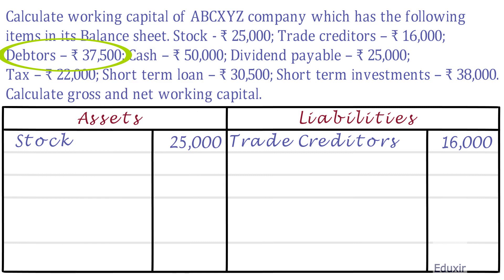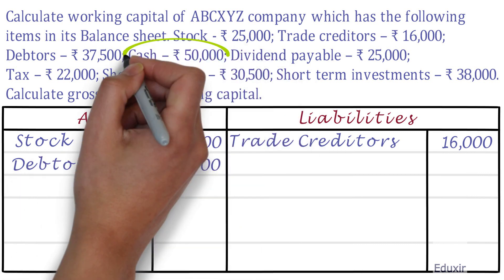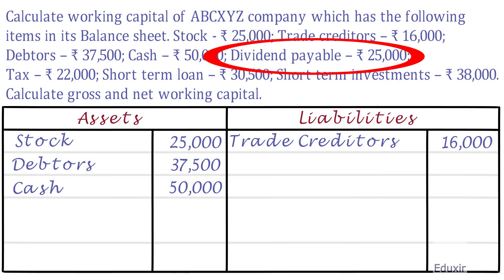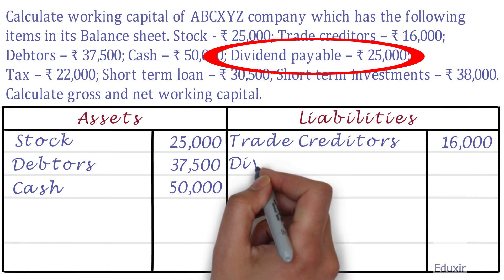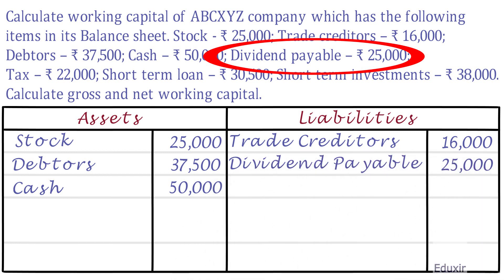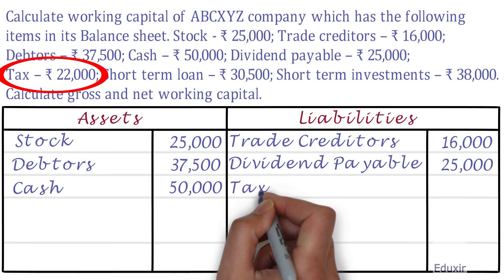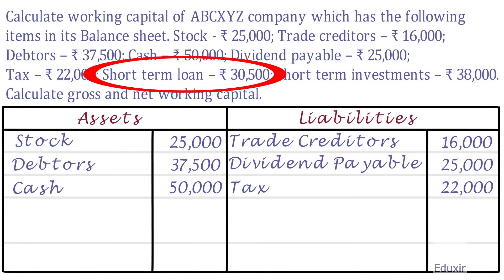Debtors fall under assets — this is the amount the company has to receive from external customers or clients, so it falls under assets. Cash is obviously an asset. Dividend Payable is something that the company owes to the shareholders and other stakeholders, so it is a liability on behalf of the company. Tax is something that the company owes to the government, so it is a liability for the company. Short Term Loan is the amount that the company has borrowed from a financial institution or others, so it is a liability on behalf of the company that it has to pay in the coming days.